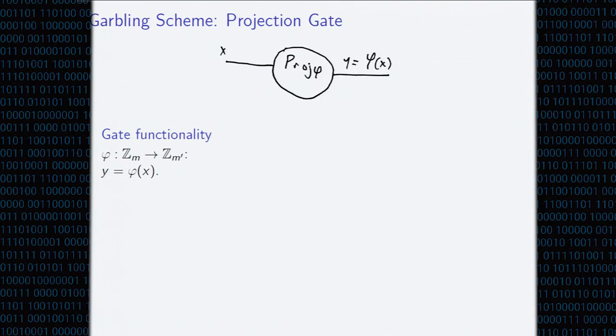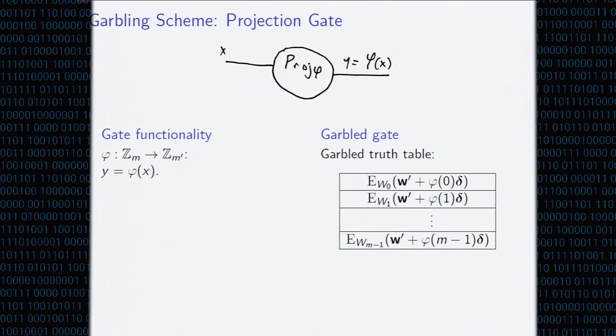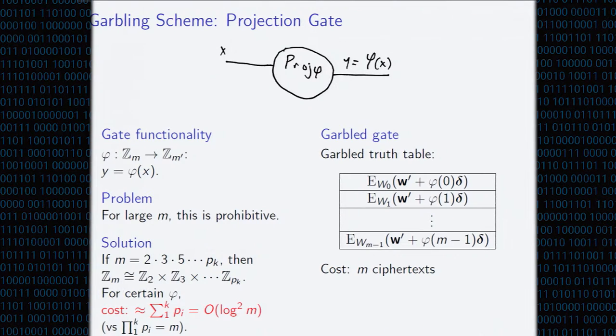The other gates that I'm going to talk about here is a projection gate. And so, this is a unary gate where you pick an arbitrary function from ring Z mod m to mod m prime. Fee, arbitrary function. And to garble this, we're just going to do the old-fashioned way, just garble the truth table. And the total cost of this is going to be m ciphertext. Now, the problem is, the domains that we're interested in, we're interested in working over large moduli. But for large m, this is going to be prohibitively expensive.